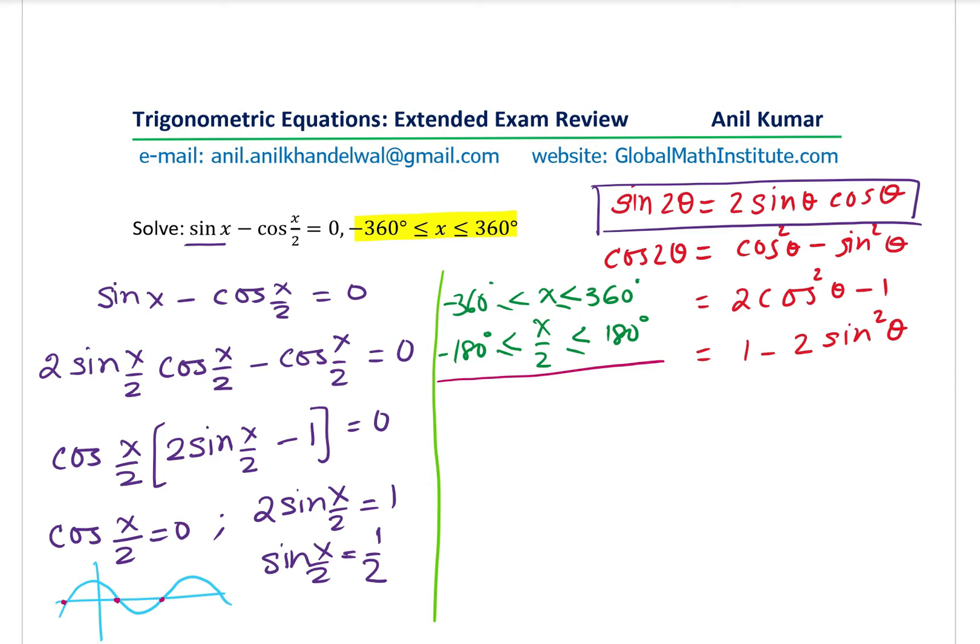So for cos of x by 2 equals 0, we get two solutions, which is x by 2 equals minus 90 degrees or x by 2 equals plus 90 degrees. With that, you get the value of x as equal to 2 times minus 90 is minus 180 degrees and plus 180 degrees. That becomes one part of our solution.